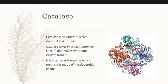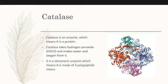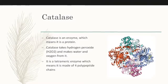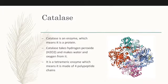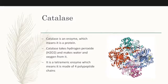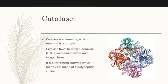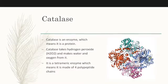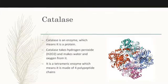Catalase is a tetrameric enzyme, which means it is made of 4 polypeptide chains, 4 NADPH groups, and also 4 porphyrin heme groups. Heme is a protein that helps with the catalyzing reactions involving oxygen. The NADPH helps to protect the enzyme from inactivation from hydrogen peroxide.